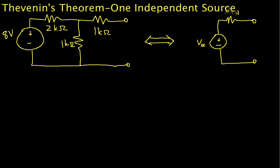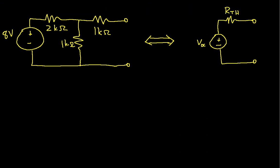Welcome to this video. We will find the Thevenin equivalent circuit of a simple circuit with one independent source. The circuit is on the left, and the structure of the Thevenin equivalent is on the right. What we need to do is find VOC, which is the open circuit voltage, and RTH, which is the equivalent Thevenin resistance.